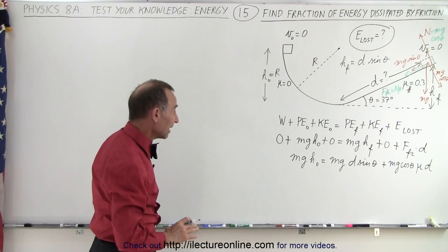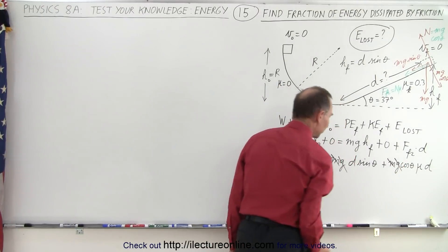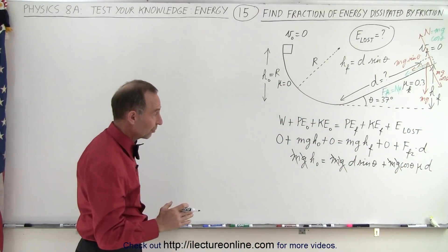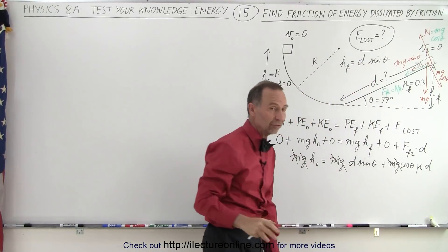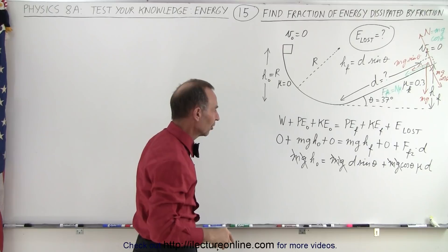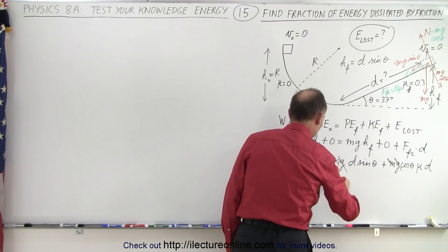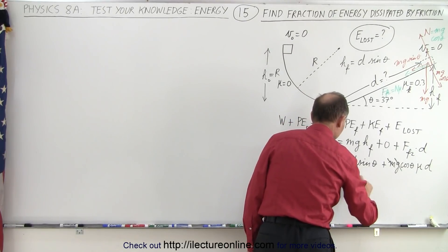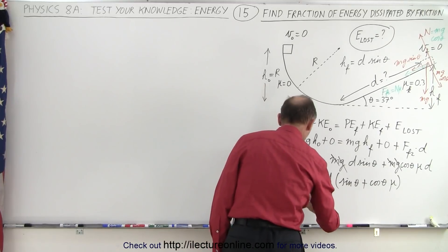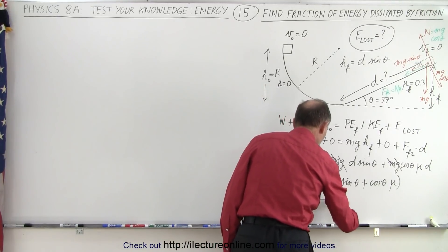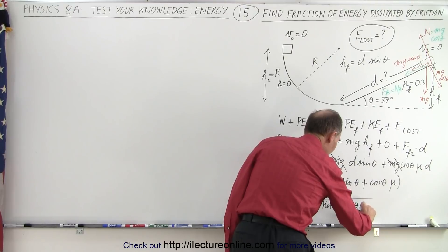Right away we can see that we can cancel g and m by dividing both sides by m and g. We want to find d first. Factoring out d gives us: h_initial equals d times (sin θ + cos θ · μ). So finally we can say that d equals h_initial divided by (sin θ + cos θ · μ).